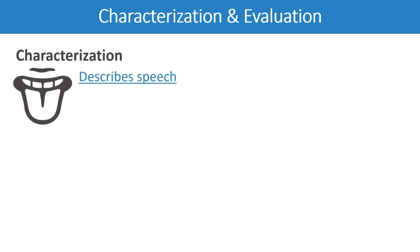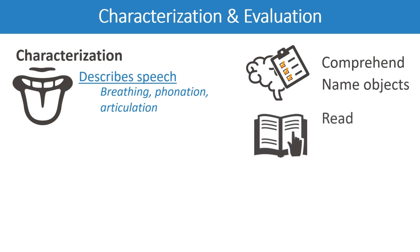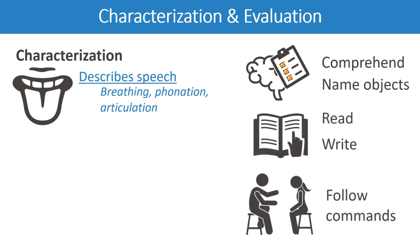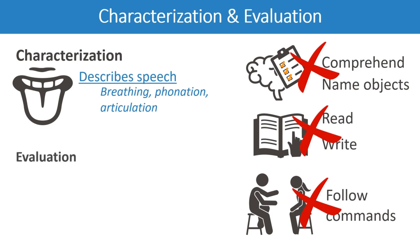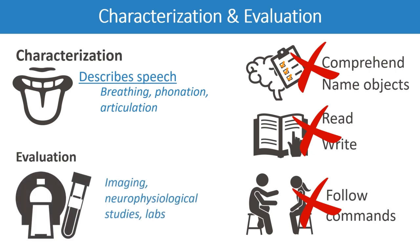The characterization of dysarthria describes the patient's speech in terms of breathing, phonation, or articulation. The ability to comprehend, name objects, read, write, and follow commands are not affected, as they might be in someone with aphasia. Further evaluation of dysarthria can include imaging, neurophysiological studies, or labs.